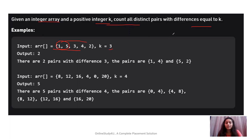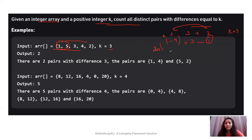Let's see this example. If we have the array [1, 5, 3, 4, 2] and k equals to 3, all the pairs whose difference equals to k: one pair can be 1 and 4, because the absolute value of 1 minus 4 is equal to 3. Another pair can be 5 minus 2, which is also equal to 3. So the total number of pairs are 2, and the output is also 2.